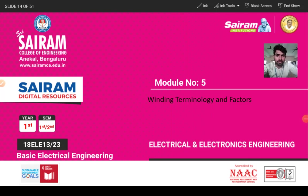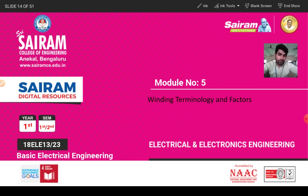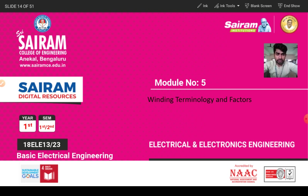In this video we will discuss winding terminologies and winding factors. This is module number five and the subject is common for all engineering branches. Winding terminologies are applicable to only the stator. In the DC generator, windings are kept in the rotor, but in the AC generator — the alternator or synchronous generator — windings are placed in the stator.